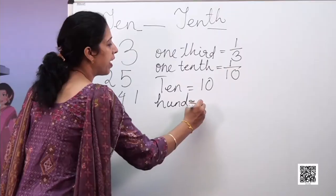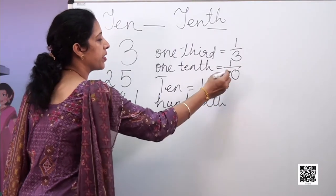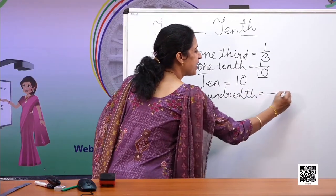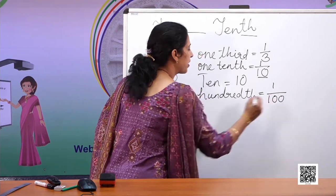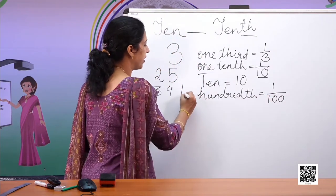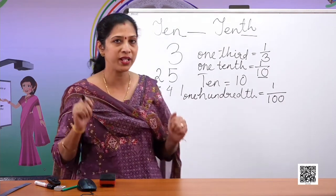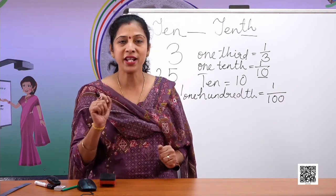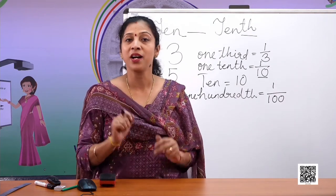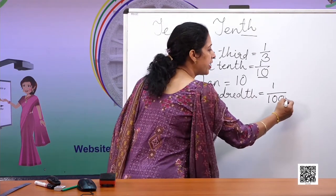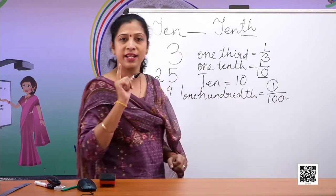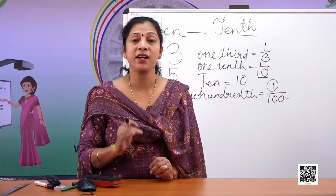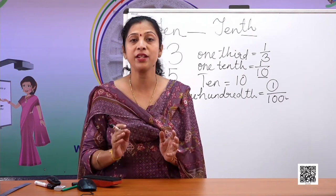Similarly, hundredth — just like ten equal parts for tenth, hundredth means one part out of one hundred parts. If I write one hundredth, it is one part out of hundred. Two hundredth is two parts out of hundred. Three hundredth is three parts out of hundred. So ten and hundred are whole numbers, whereas tenth and hundredth are fractions.